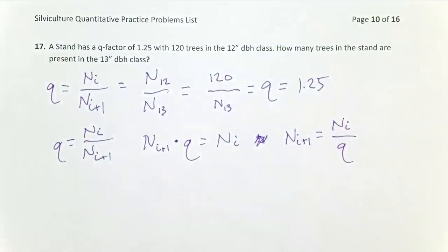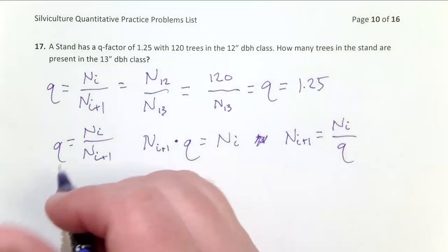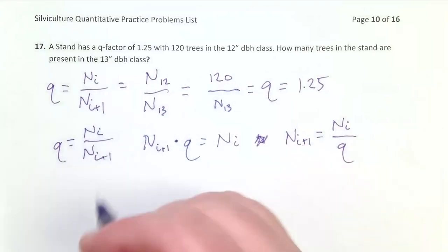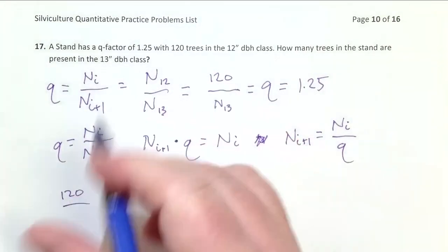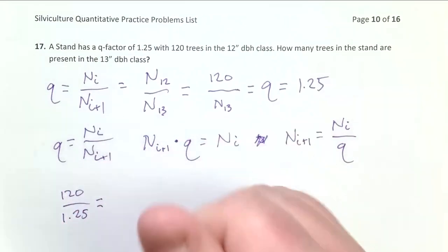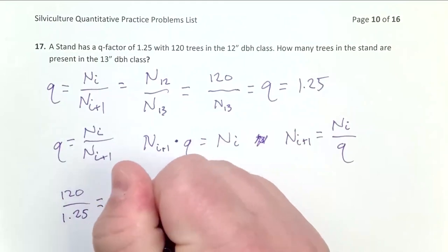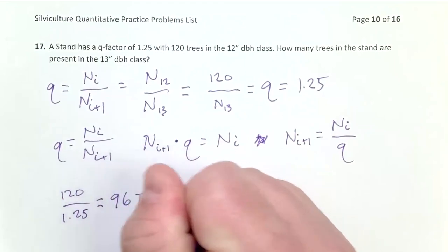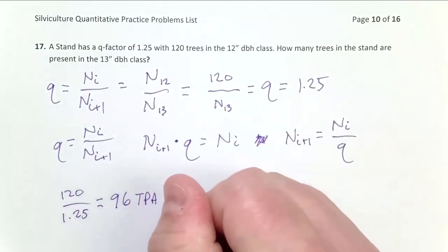When I plug all this in, using this equation: N sub I is 120, Q is 1.25, that equals 96 trees per acre in the 13-inch size class.